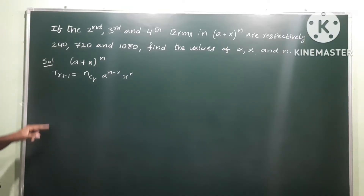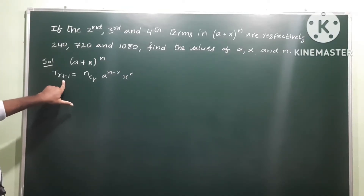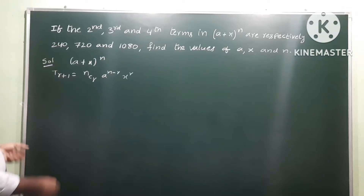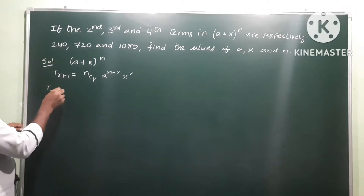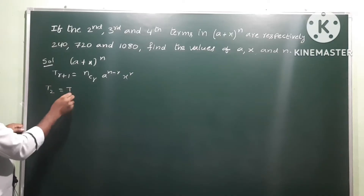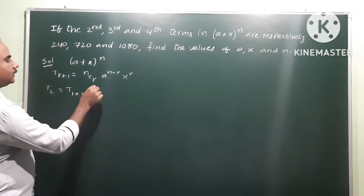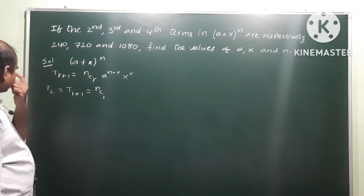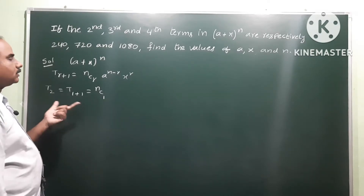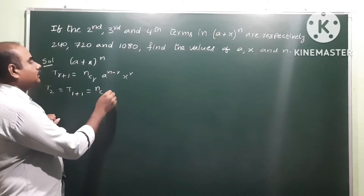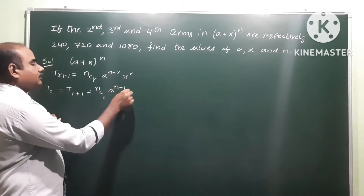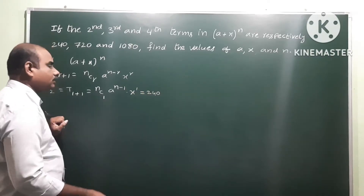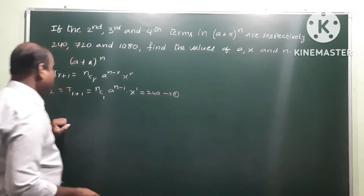So the general term is T(r+1). The second term is T2, that is T(1+1), so r = 1. So the second term with r = 1 gives: nC1 · a^(n−1) · x^1 = 240. This is equation number 1.